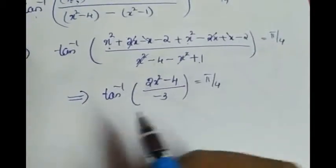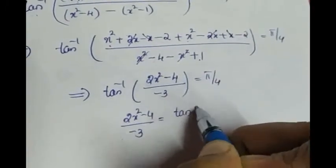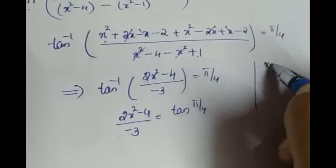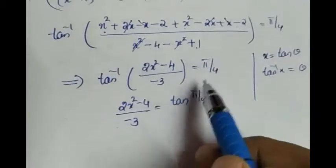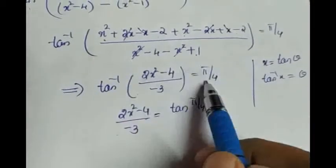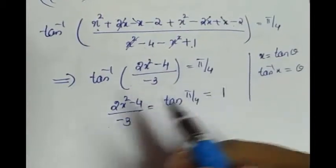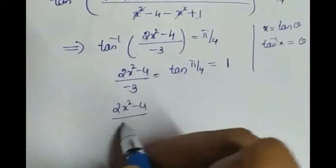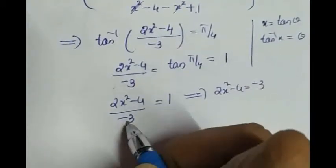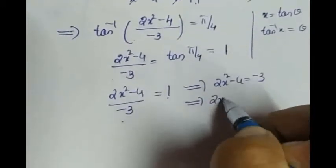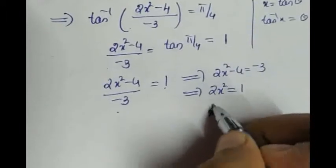So we get tan inverse of (2x squared minus 4) divided by (minus 3) equals pi by 4. Using the identity that if tan inverse of a value equals theta then the value equals tan theta, we take tan of both sides. Since tan(pi by 4) equals tan 45 degrees equals 1, we get (2x squared minus 4) divided by (minus 3) equals 1. Cross-multiplying: 2x squared minus 4 equals minus 3, so 2x squared equals minus 3 plus 4 equals 1, giving x squared equals 1 by 2.